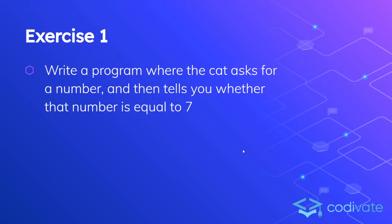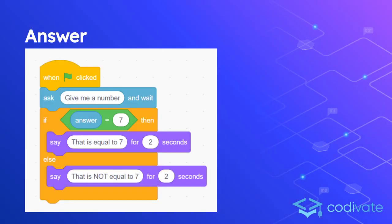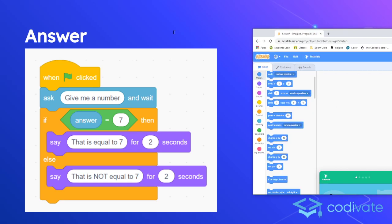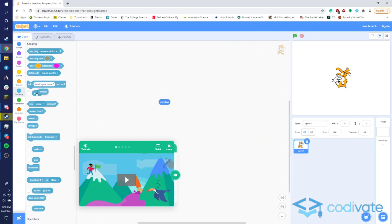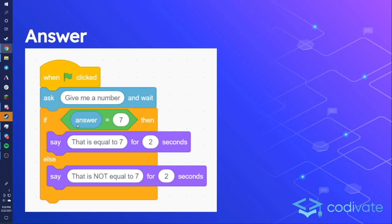Now let's do some practice. First: write a program where the cat asks for a number and then tells you whether the number is equal to 7 — this uses the ask block. Here's the answer: you ask for a number, and the answer bubble — found in the Sensing area — goes into the Boolean. If the answer is equal to 7, say it's equal to 7; if it's not, say it's not equal. That's the answer.